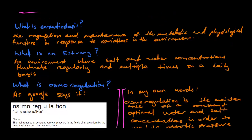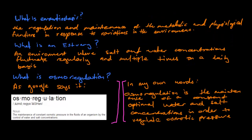What's osmoregulation? That's something else that we need to know. Google says that osmoregulation is the maintenance of constant osmotic pressure in fluids of an organism by the control of water and salt concentrations. To simplify it, it's the maintenance of a constant optimal water and salt concentration in order to regulate osmotic pressure.